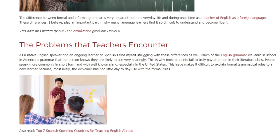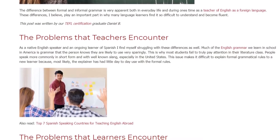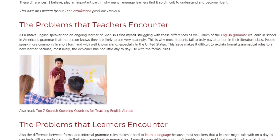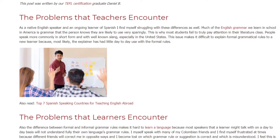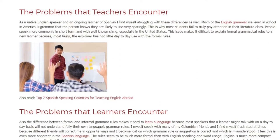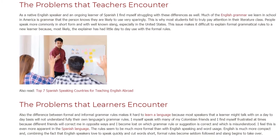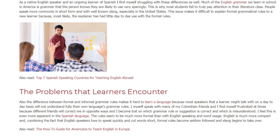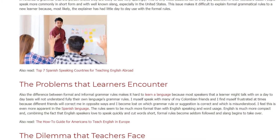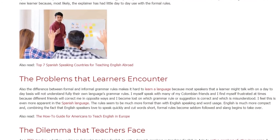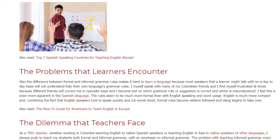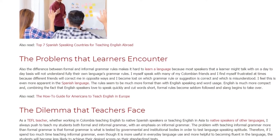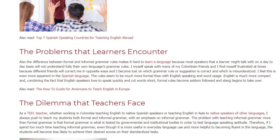The difference between formal and informal grammar rules also makes it hard to learn a language because most speakers that a learner might talk with on a day-to-day basis will not fully understand their own language's grammar rules. I speak with many of my Colombian friends and find myself frustrated at times because different friends will correct me in opposite ways, leaving me lost on which grammar rule is correct. I feel this is even more apparent in Spanish, where the rules seem much more formal than in English. English is more compact, and combining the fact that English speakers love to speak quickly and cut words short, formal rules become seldom followed and slang begins to take over.